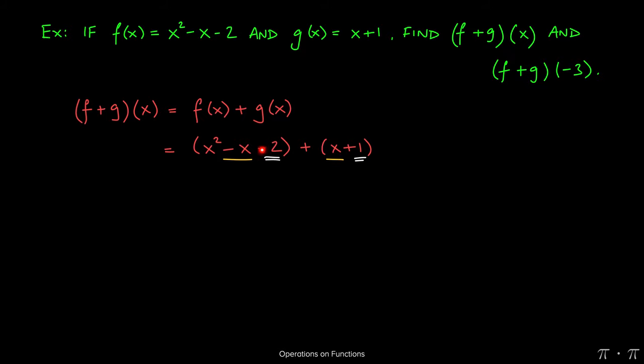And then we have a negative 2, a constant by itself, and a positive 1, a constant by itself, which is going to give us a negative 1. So here we see x squared came along for the ride, the x's cancel each other out, negative 2 plus 1 gives the negative 1.